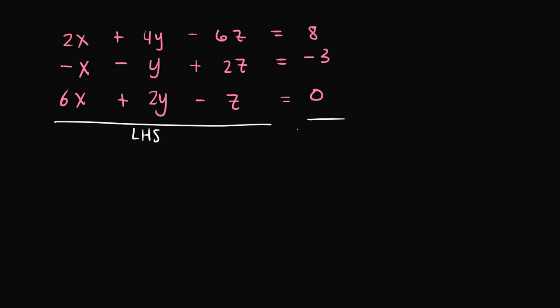A coefficient matrix is a matrix of numbers that correspond to the coefficients of all the unknown variables. Here we have three equations and three unknown variables: x, y, and z. So we know our coefficient matrix is going to be a 3 by 3 matrix. The rows correspond to the number of equations, and the columns correspond to the number of unknown variables.